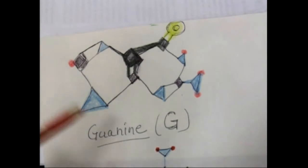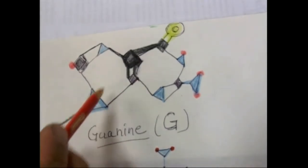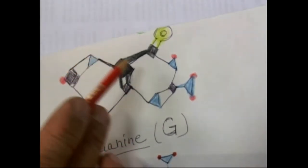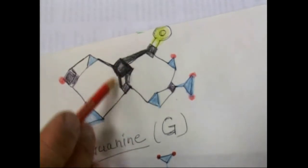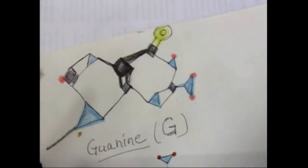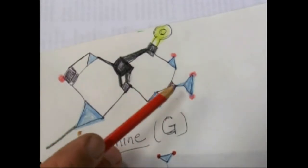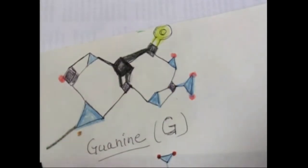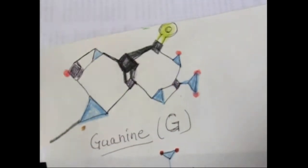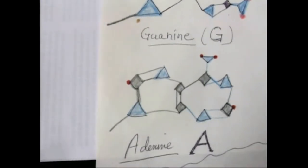See these things — triangles, diamond, triangle, diamond, double bond, triangle, circle, oxygen, triangle, triangle, triangle. This is guanine. Adenine. Now we can compare them.